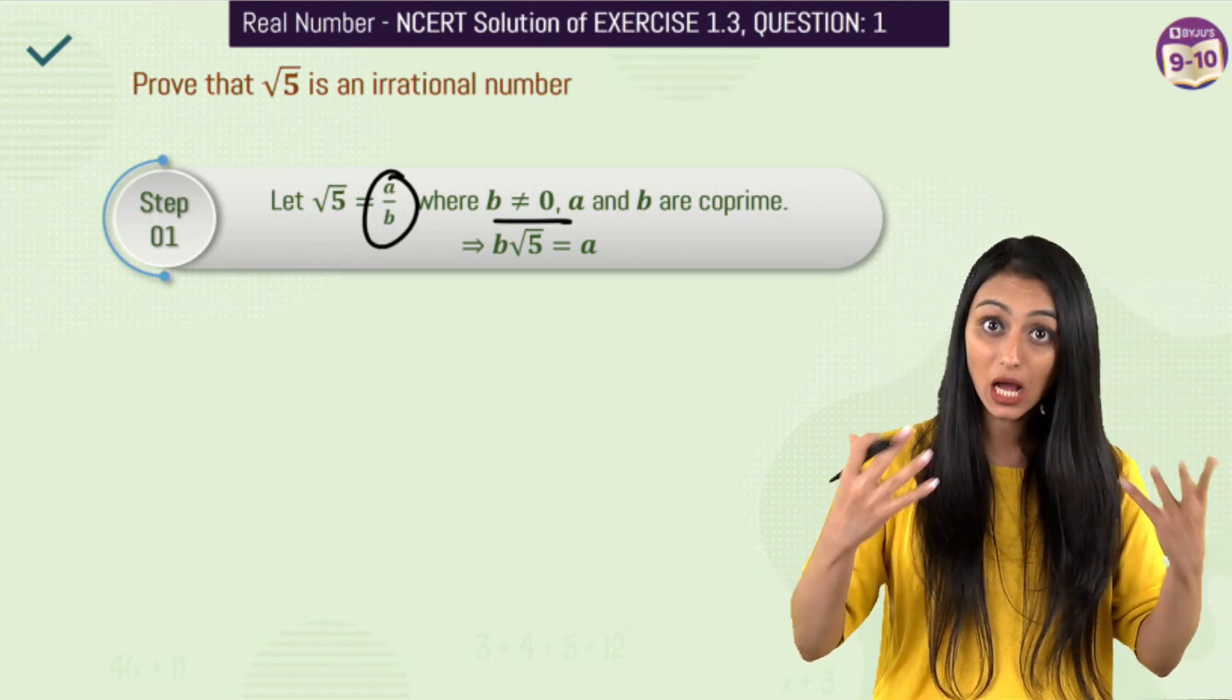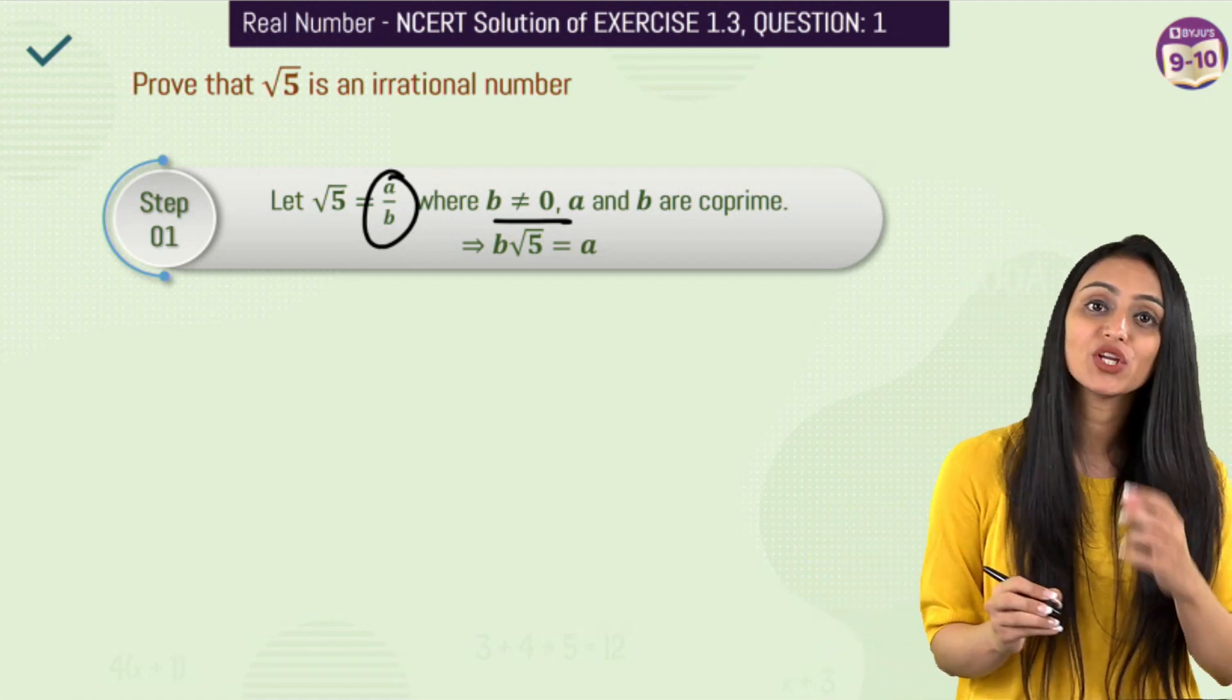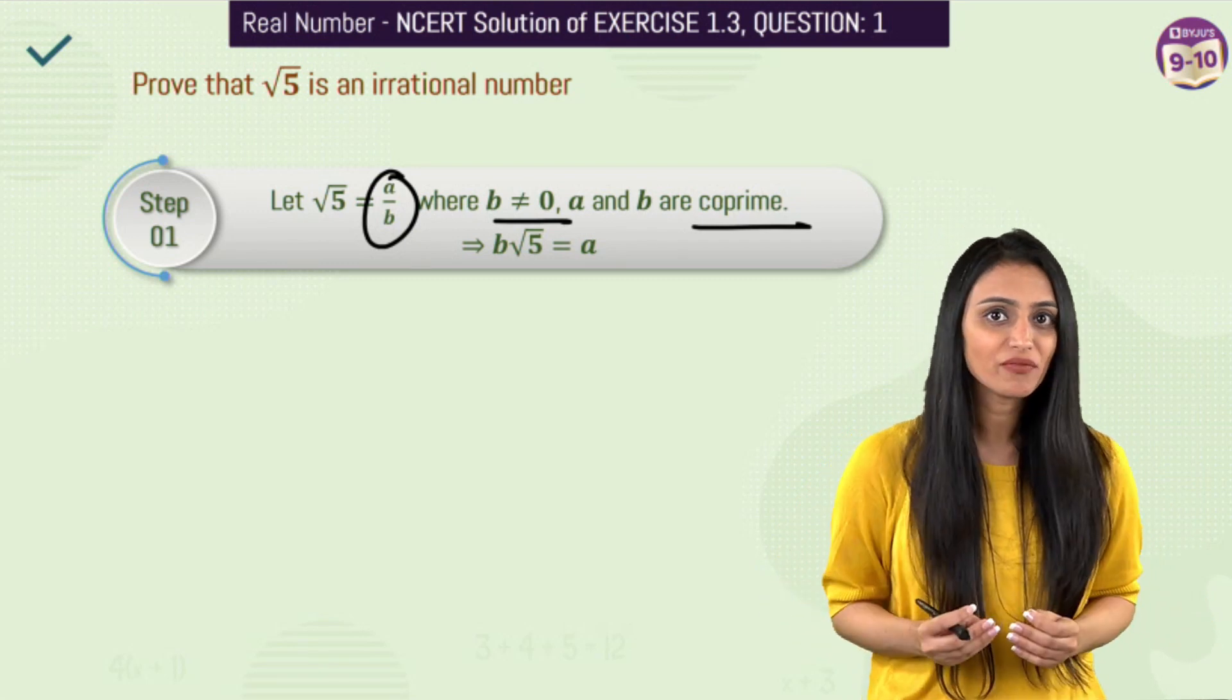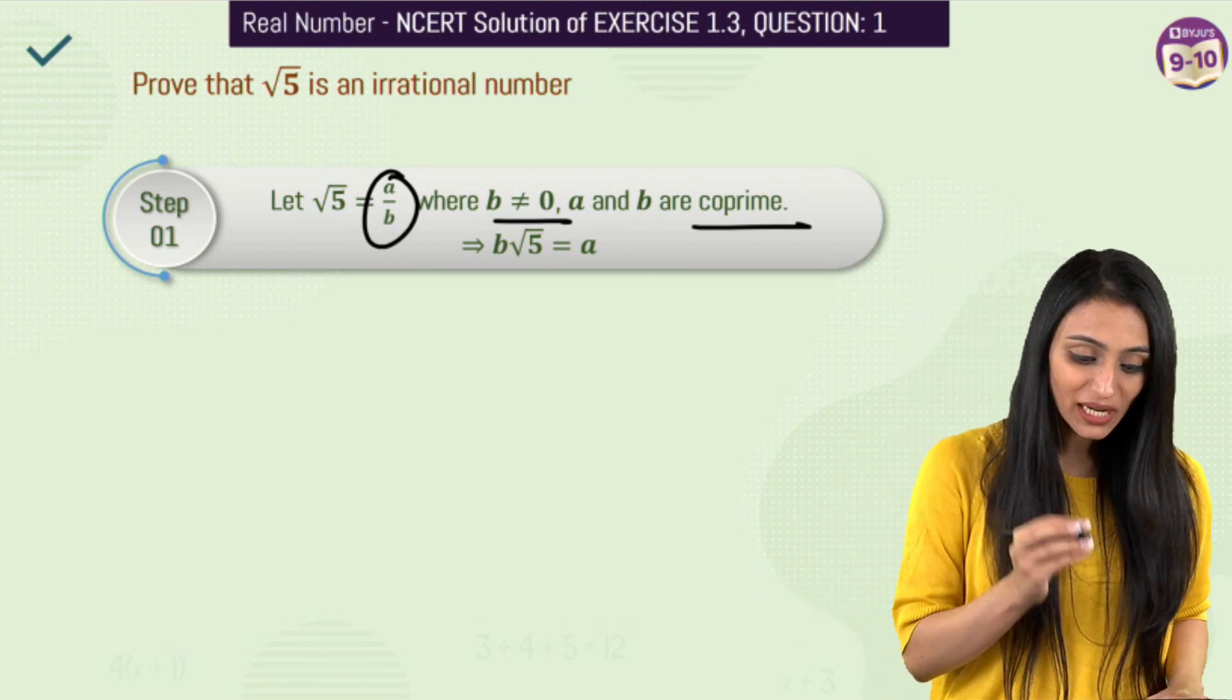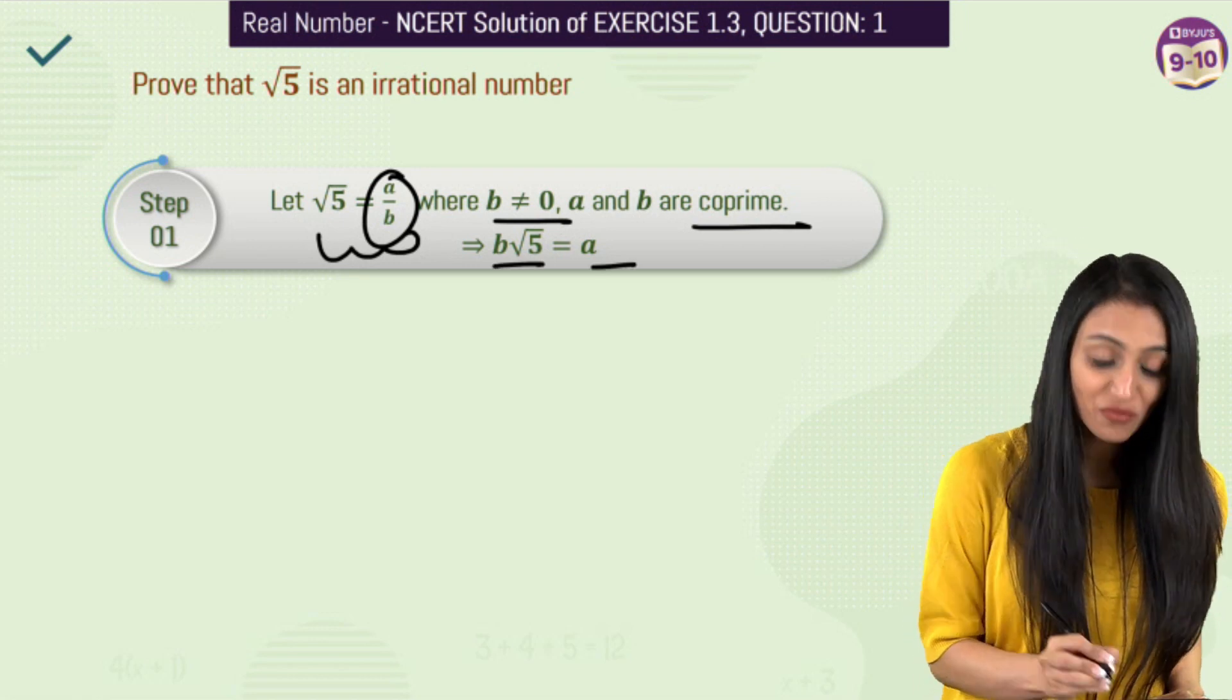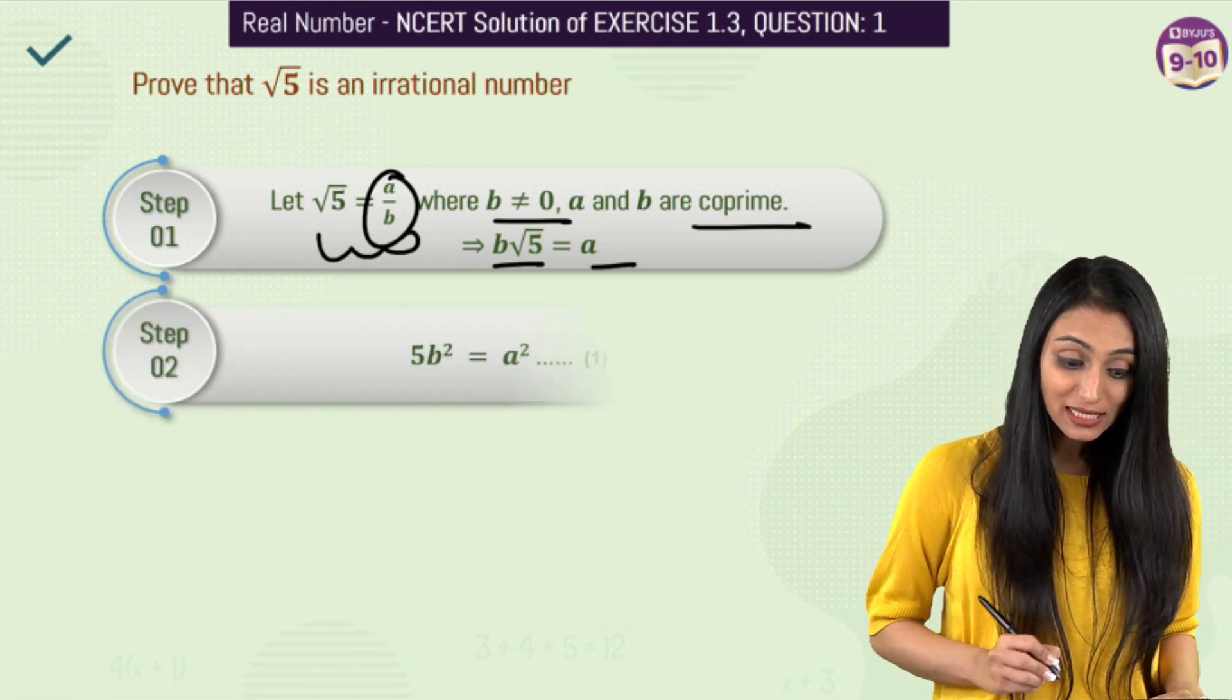And a and b over here are integers and they are co-prime. Co-prime means they have nothing common between them. Their common factor could be 1 only. So what I will do is, here I am going to cross multiply them. So this becomes b root 5 equals to a. Now the next step is going to be, we will take squaring both sides.